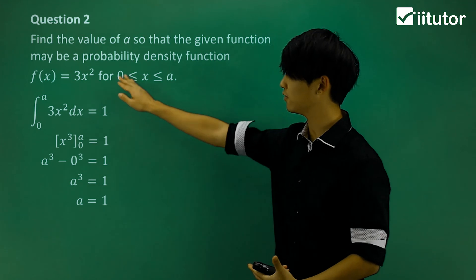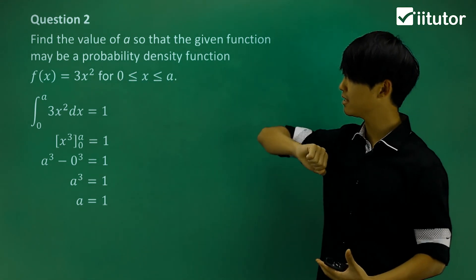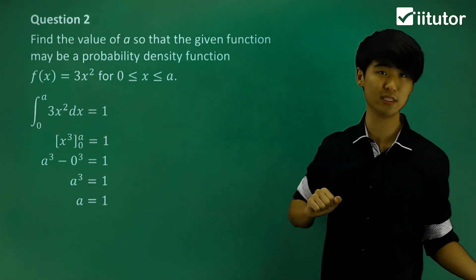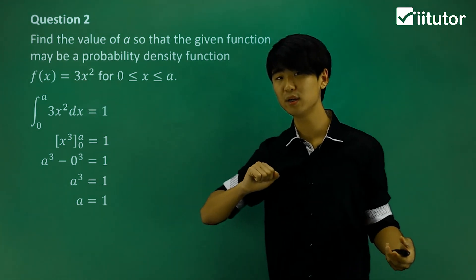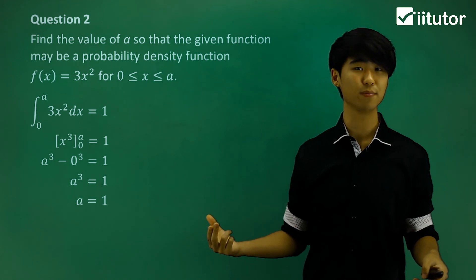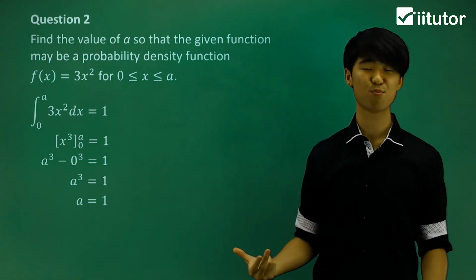So if a equals to 1 in this domain, so if a is 1 and so my domain is between 0 and 1, then my function 3x squared will have an area under the curve equaling to 1, which allows it to be a probability density function.